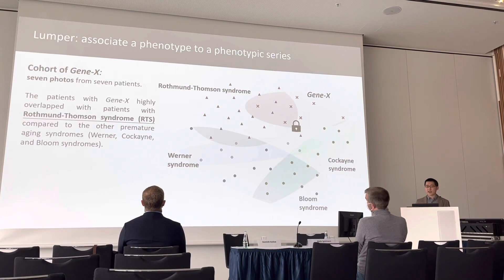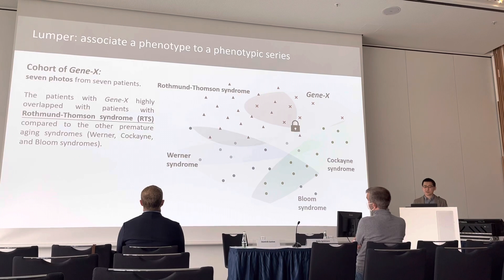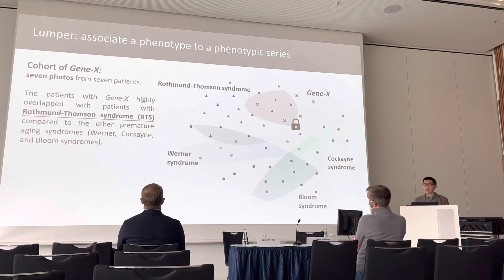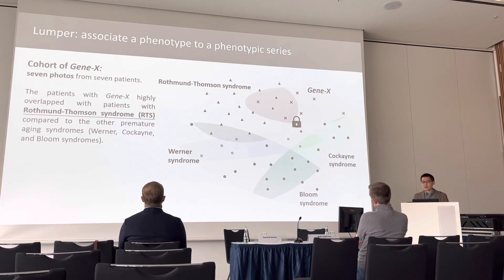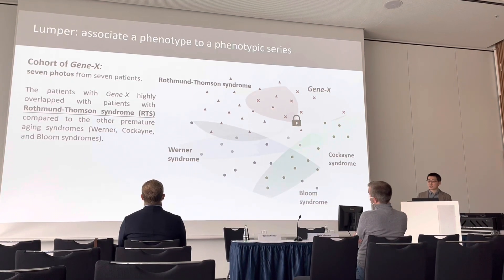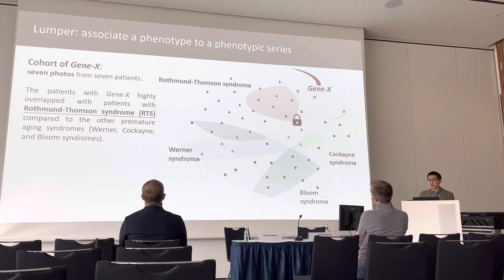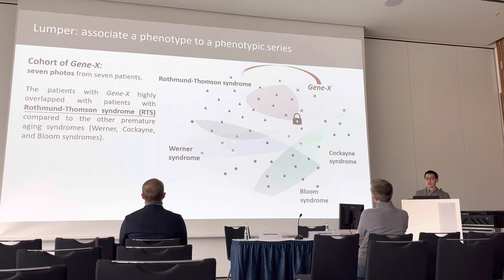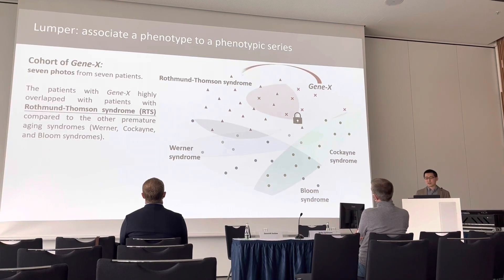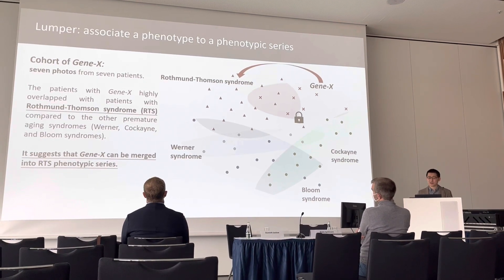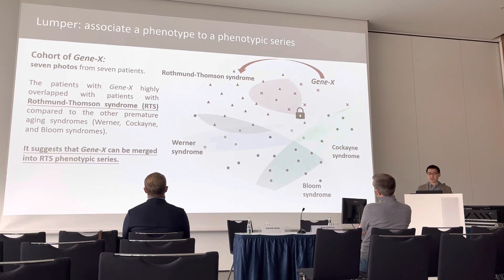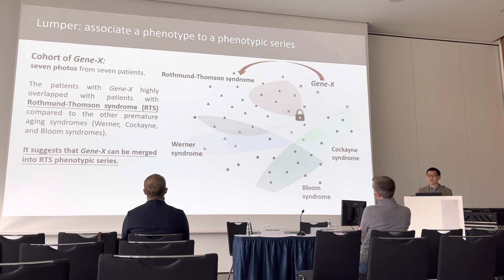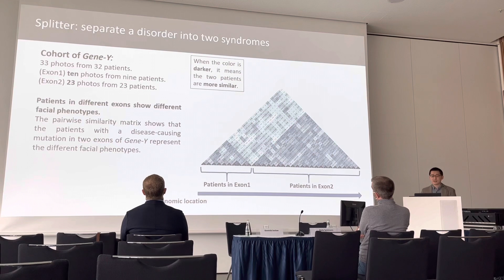We found that Gene X has premature facial features. We compared Gene X to other syndromes like Hultman-Thompson syndrome, Bloom syndrome, and Bourneville-Pringle syndrome. In the t-SNE projection on the right, the patients of Gene X are highly overlapped with Hultman-Thompson syndrome and clearly separated from Cockayne and Bloom syndromes. Therefore, the results suggest that Gene X might be merged into the Hultman-Thompson phenotypic series.